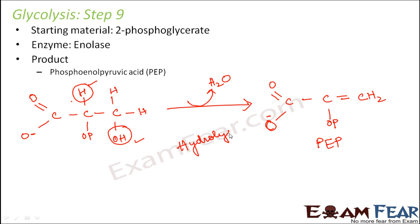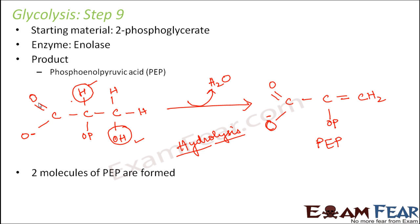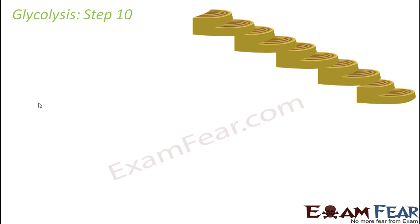This process is called dehydration — 'hydro' means water and 'lysis' means breakdown, so removing water from a molecule is hydrolysis. This step also occurs twice, so two molecules of phosphoenolpyruvic acid are formed and two water molecules are released — one per step.